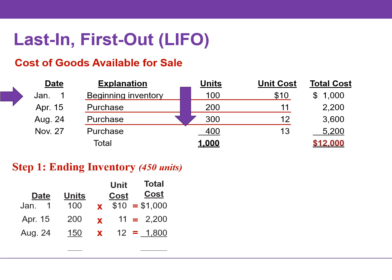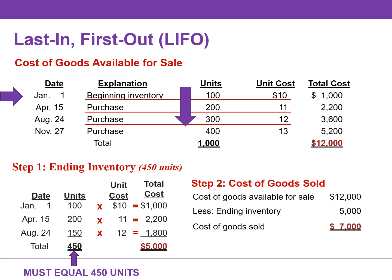When we assign cost to our ending inventory, we use 100 units at $10, then work forward to the next purchase of 200 units at $11, and finally 150 units at $12 to account for the total ending inventory of 450. This means our ending inventory is valued at $5,000. We calculate cost of goods sold by subtracting ending inventory from the cost of goods available for sale — $12,000 — giving us a cost of goods sold of $7,000.